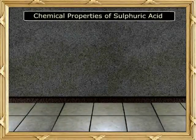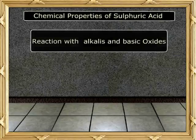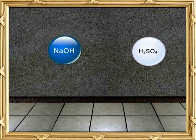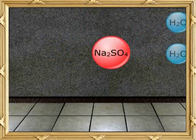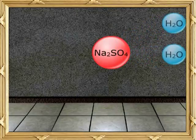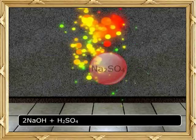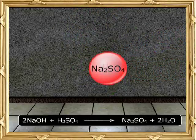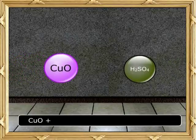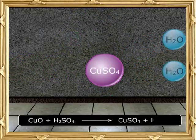Chemical Properties of Sulfuric Acid. 1. Reaction with Alkalis and Basic Oxides: Sulfuric acid reacts with Sodium Hydroxide and Basic Oxides, giving rise to corresponding salts and water. 2 NaOH + H2SO4 → Na2SO4 + 2 H2O. CuO + H2SO4 → CuSO4 + H2O.